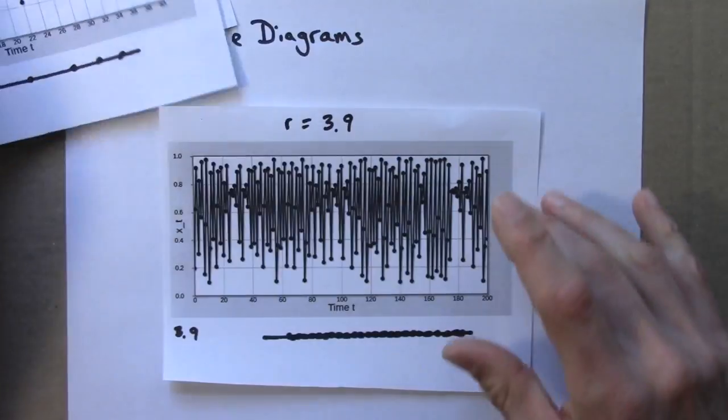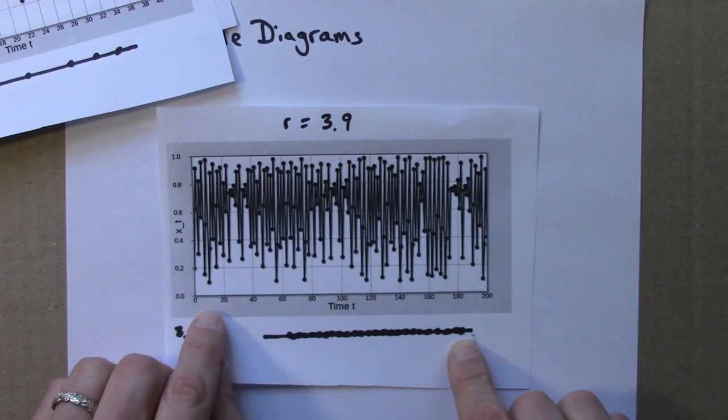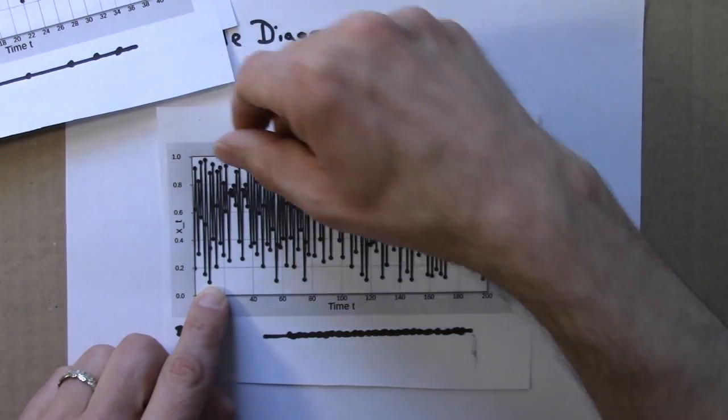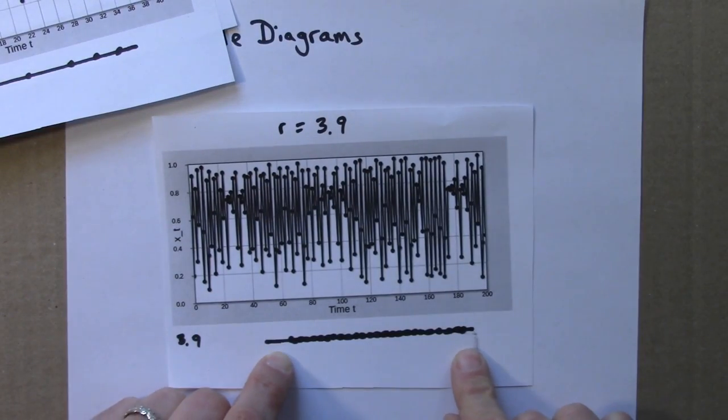And then another aperiodic one, 3.9, where here the dots extend from about 0.1 to almost 1 exactly, maybe 0.98. So it might look something like this.